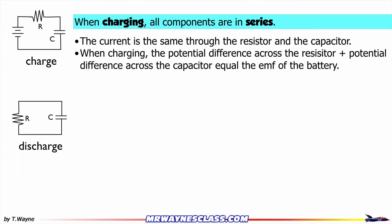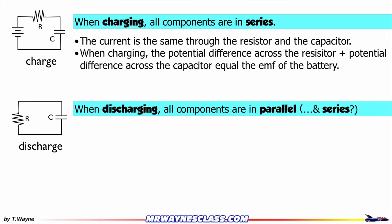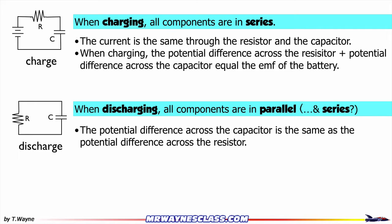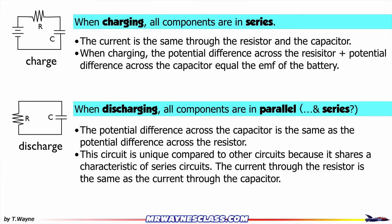This is the other type of circuit — a discharging circuit. This is used for taking charge's energy off the capacitor and heating up the resistor. When discharging, all components are in parallel, and they have a series characteristic as well. The potential difference across the capacitor is the same as the potential difference across the resistor. That's the parallel part, but they're also in series with each other, so the circuit has the same current on the capacitor as it does through the resistor.